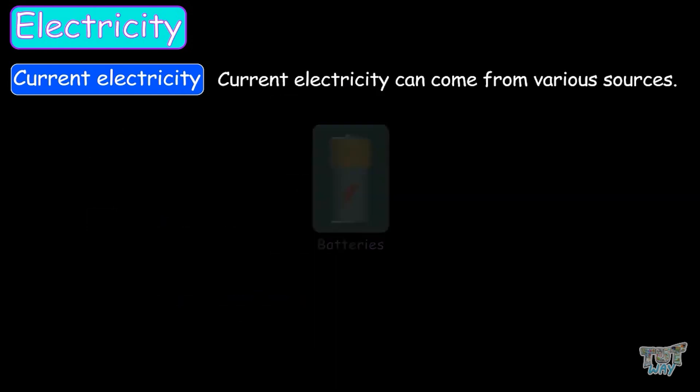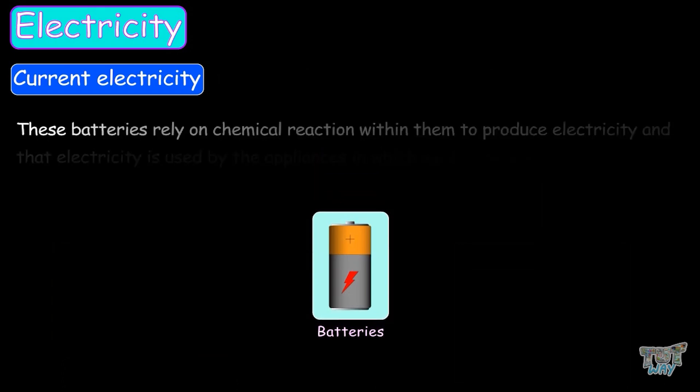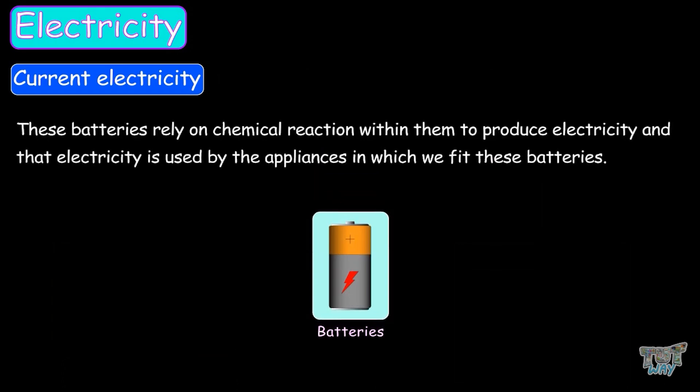Current electricity can come from various sources, and the most commonly used are batteries that you can see and use in your toys, remotes, and so on. These batteries rely on chemical reactions within them to produce electricity, and that electricity is used by appliances into which we fit these batteries.